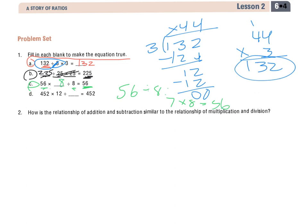And again, we see our times 8, our multiplication of 8, and our division of 8, they cancel off, and we'll end up with 56 and 56. So let's take a look down at the very last question, question 2. And it says, how is the relationship of addition and subtraction, which was lesson 1, similar to the relationship of multiplication and division?